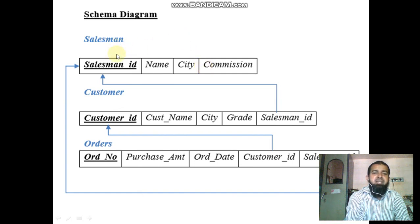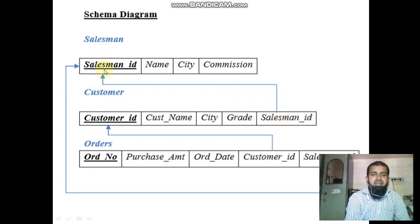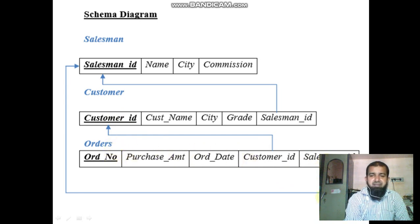Next, the schema diagram. Salesman contains salesman ID, name, city, commission. Customer contains customer ID, customer name, city, grade, and salesman ID. Orders contain order number, purchase amount, order date, customer ID, and salesman ID. Salesman ID is the primary key in the salesman table. Customer ID is the primary key in the customer table. Order number is the primary key in the orders table. Salesman ID in the customer table references salesman ID of the salesman table. Customer ID in the orders table references customer ID of the customer table. Salesman ID in the orders table references salesman ID of the salesman table.